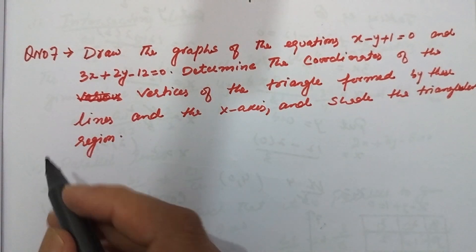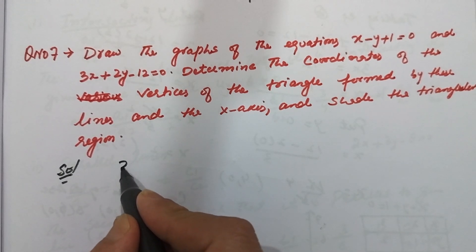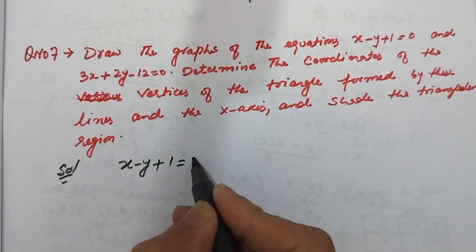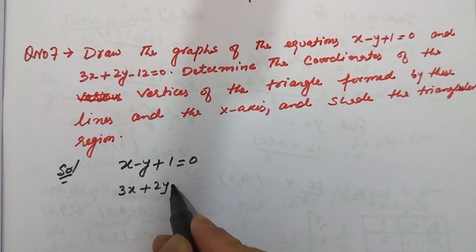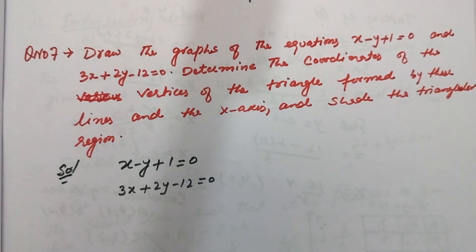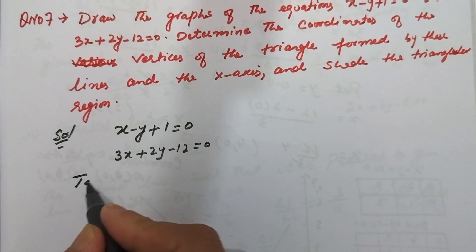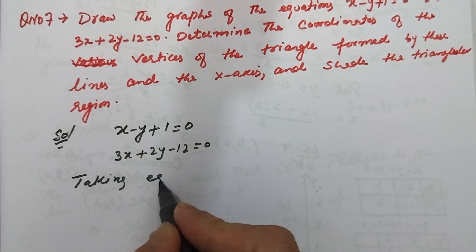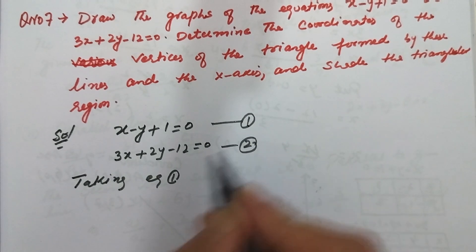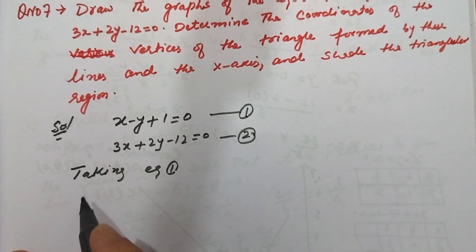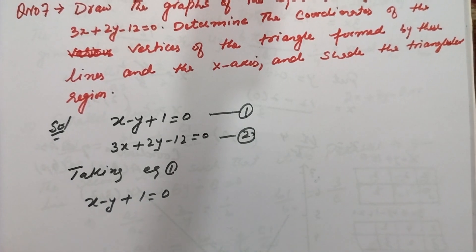Here we take equation 1 and equation 2. The first equation is x minus y plus 1 equal to 0. The second is 3x plus 2y minus 12 equal to 0. First we take the solutions. We take the equation first, x minus y plus 1 equal to 0.